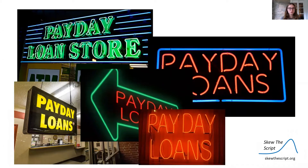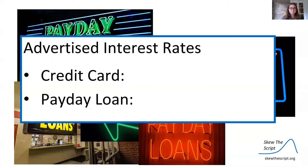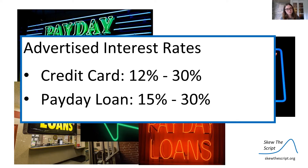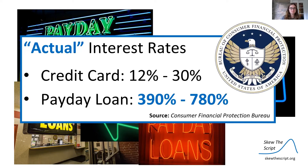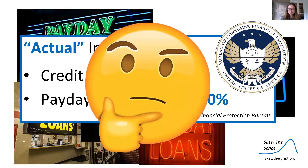Payday loans are a short-term loan that works in a similar way, and you can see signs like these near you. Advertised interest rates are interesting to talk about. For credit cards, the advertised interest rates are usually between 12% to 30%, and for payday loans usually between 15% and 30%. However, according to the Bureau of Consumer Financial Protection, the actual interest rates for payday loans are between 390% and 780%. What's going on here?